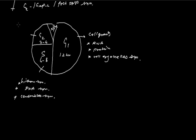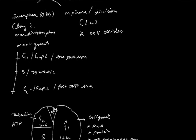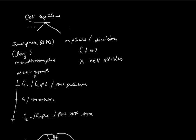In G2 stage, mainly proteins are formed — particularly tubulin proteins. ATP will also be formed here, because the cell requires ATP to divide. The actual preparation for cell division occurs in G2 stage. Now in M phase, the M phase is further divided into two parts: mitosis and meiosis.